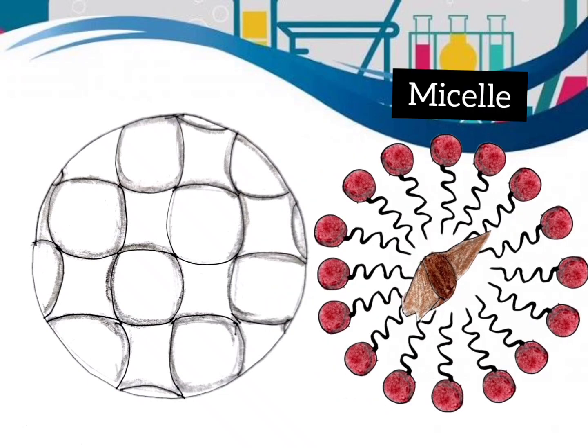One end of a micelle faces the oil droplet, while the other end, which is ionic, faces the outside. Therefore, it forms an emulsion in water and helps in dissolving the dirt when we wash our clothes.